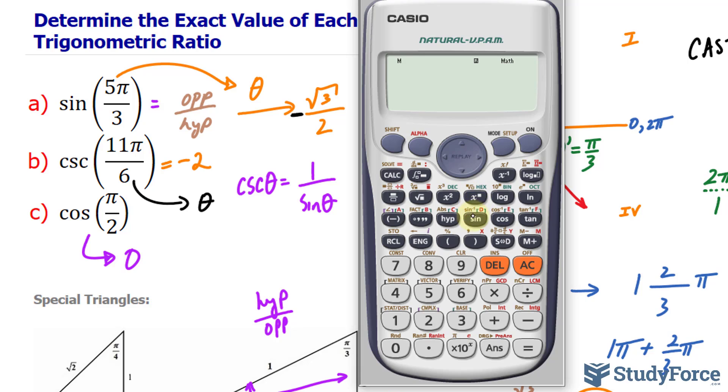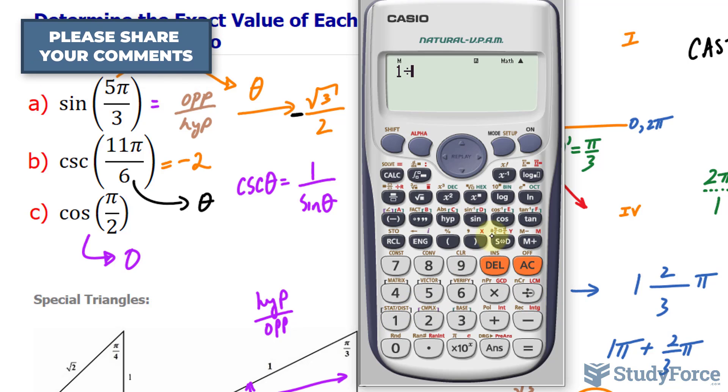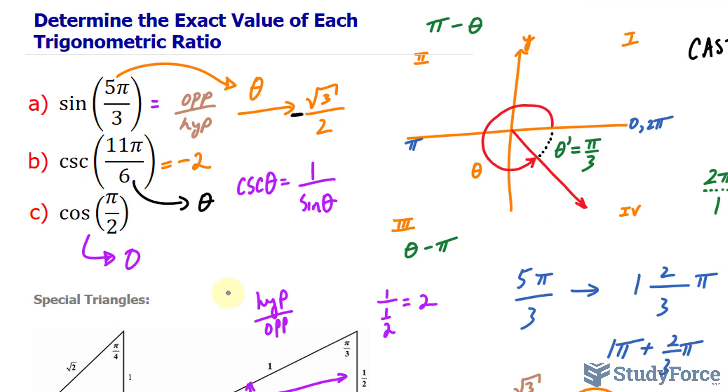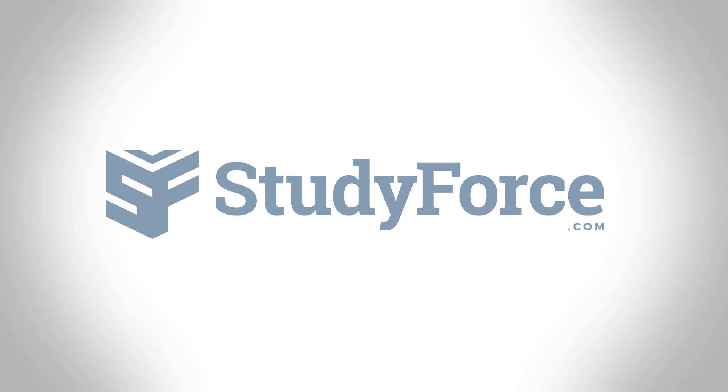We pull out our calculator. Make sure that your calculator's in radians as mine is. 5 times π over 3. My calculator gives me the same answer. For question B, I don't have cosecant as a function, but I can easily write down 1 over sine at this angle. 11π over 6, and we get negative 2. And lastly, cosine at π over 2 makes 0. And there you have it. That is how to determine the exact value of each trigonometric ratio.